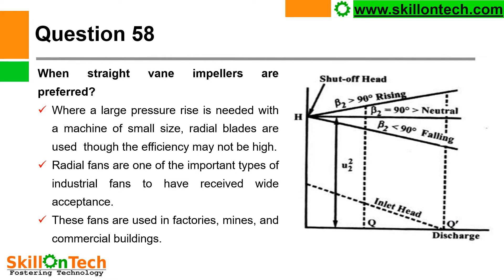Question 58: When are straight vane impellers preferred? Where a large pressure rise is needed with a machine of small size, radial blades are used, though efficiency may not be high. Radial fans are an important type of industrial fan used in factories, mines, and commercial buildings. You can see a picture showing shut-off head and discharge. The blade angle beta-2 greater than 90 degrees corresponds to forward curved vanes; beta-2 equal to 90 degrees is neutral (radial); and beta-2 less than 90 degrees corresponds to backward curved vanes.